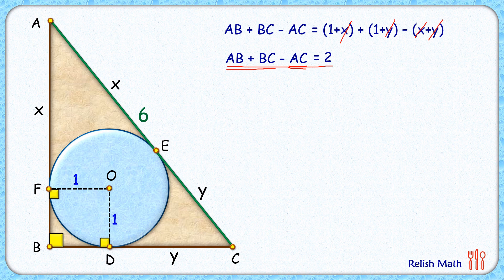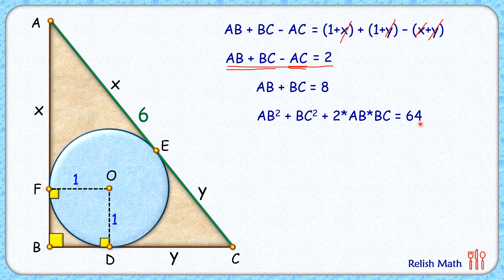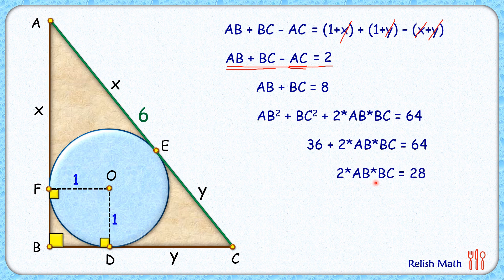Now squaring both sides, we will get AB² plus BC² plus 2 times AB times BC is 8² or 64. Now again, AB² plus BC², because it's a right angle triangle, so by Pythagorean theorem it will be equal to AC², and AC is 6 so AC² will be 36. Now simplifying, we'll get 2 times AB times BC is 28, and dividing by 4 on both sides, we'll get half AB times BC is 7. And half AB times BC is the area of the triangle.